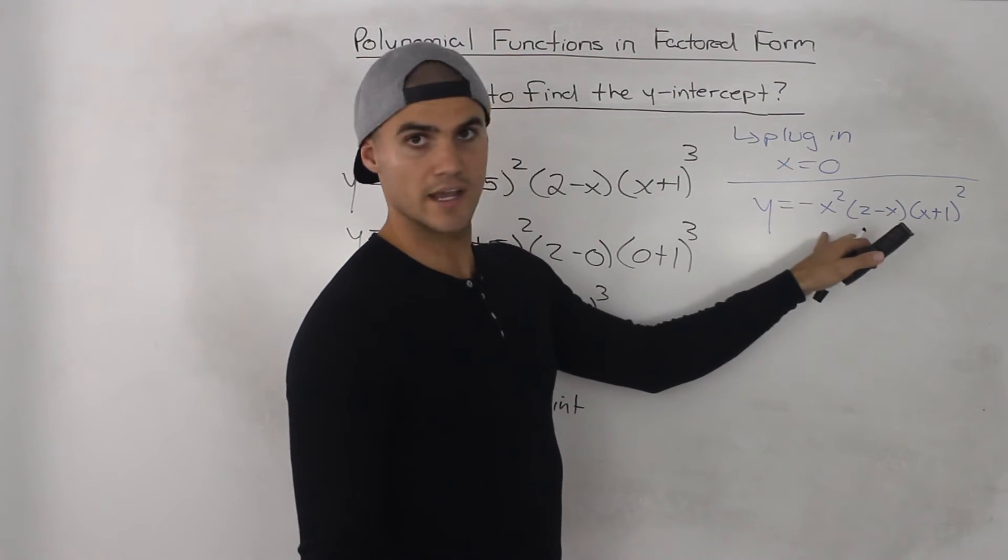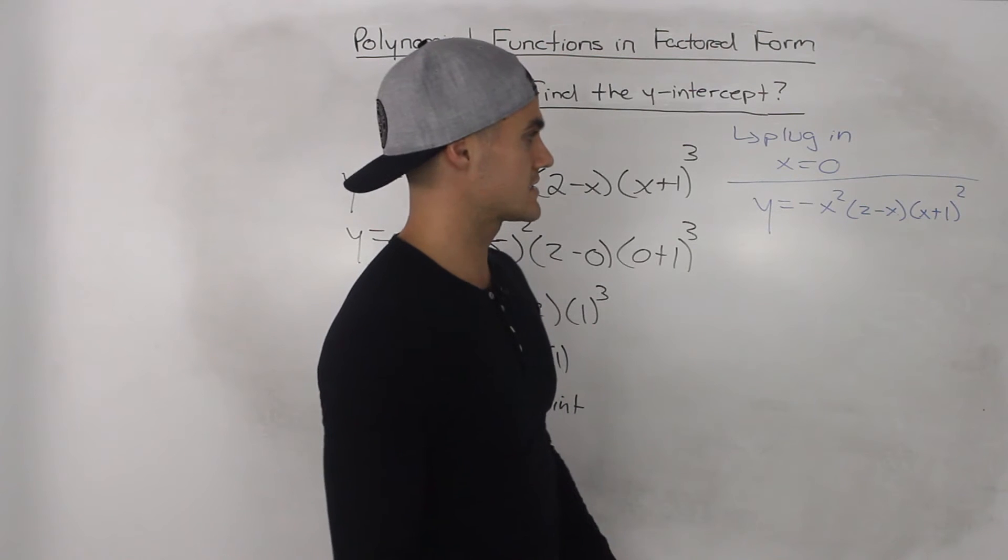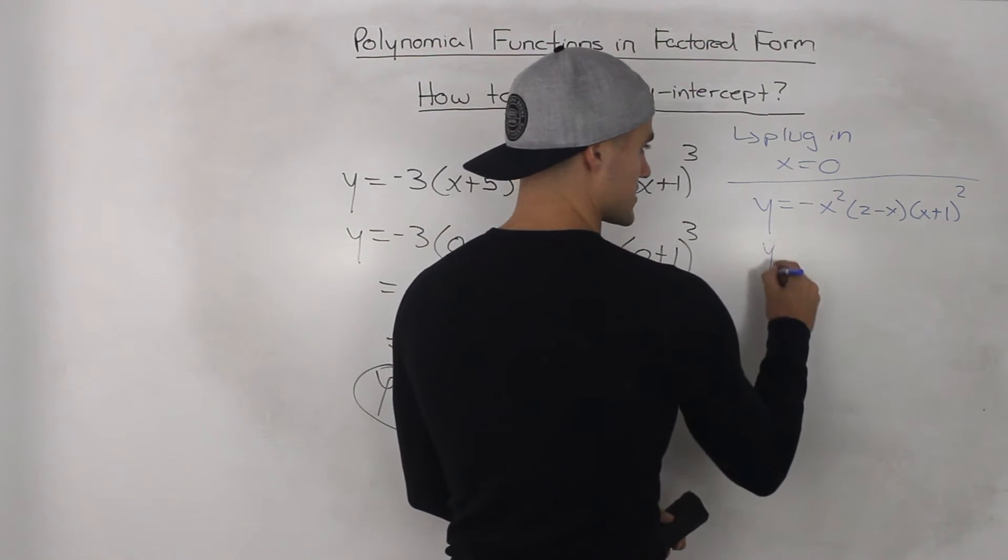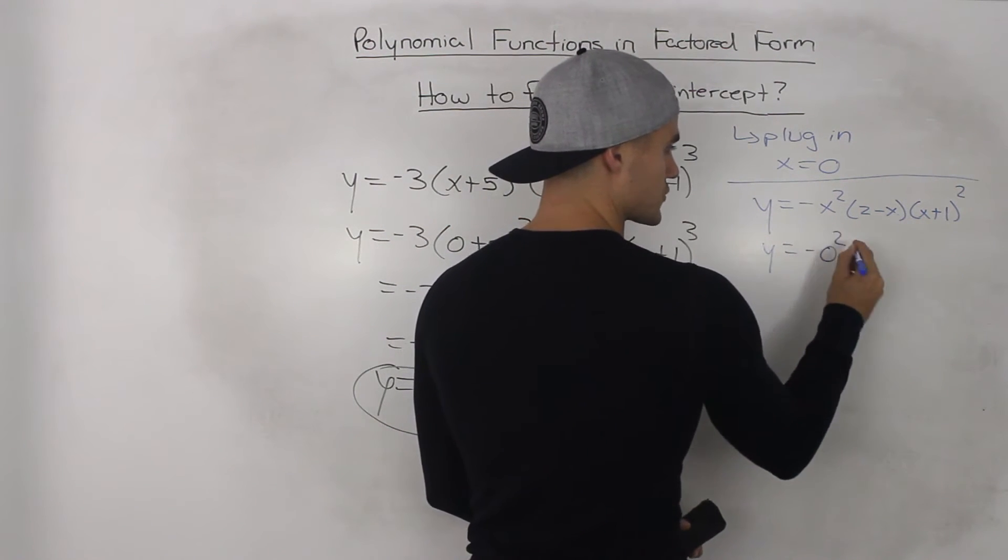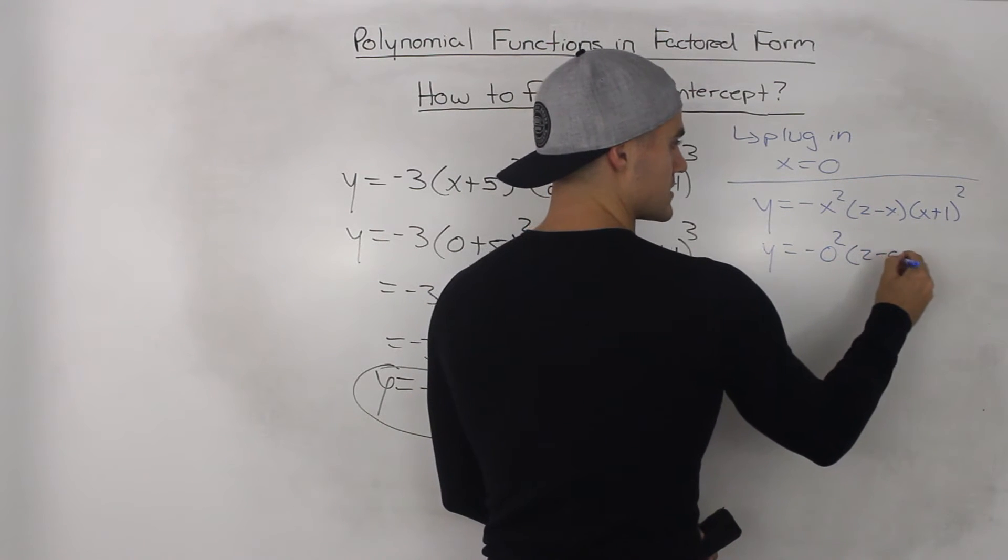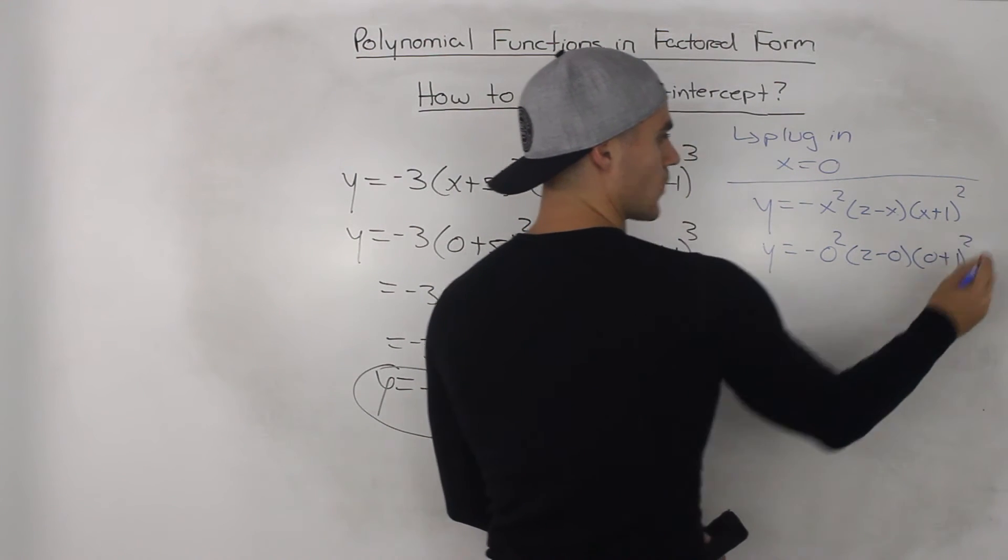Next example, y is equal to negative x squared times 2 minus x times x plus 1 squared. Again just plug in 0 for all the x's. So you'd have 0 squared there, 2 minus 0 and then 0 plus 1 squared.